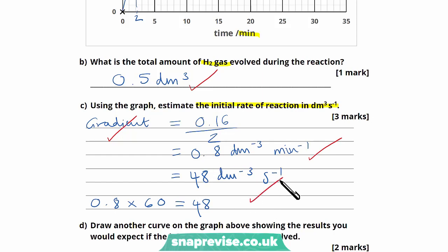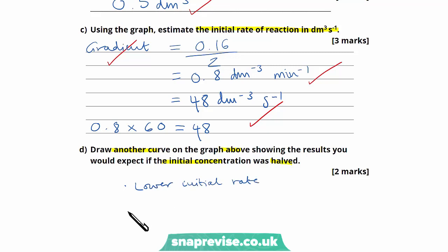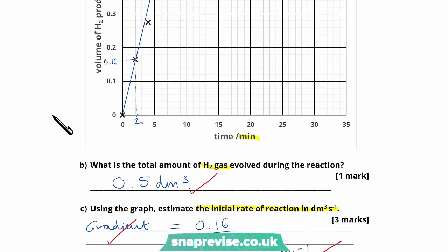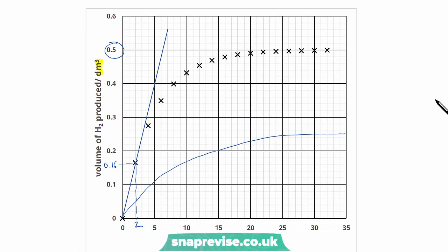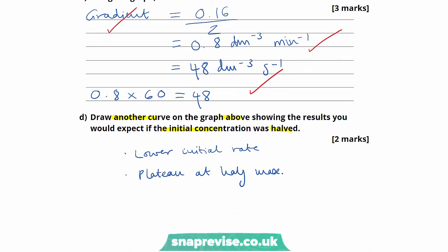In part d, we're asked to draw another curve showing the results expected if the initial concentration was halved. If the initial concentration is halved, we expect a lower initial rate and a plateau at half the maximum amount of hydrogen gas evolved — around 0.25 dm³. The two marks are awarded for showing a lower initial gradient in the initial portion and a plateau at half the maximum.